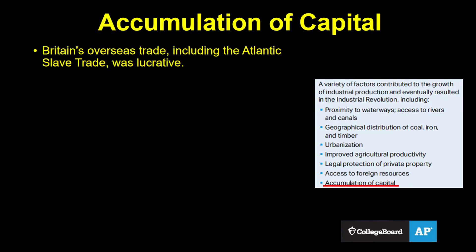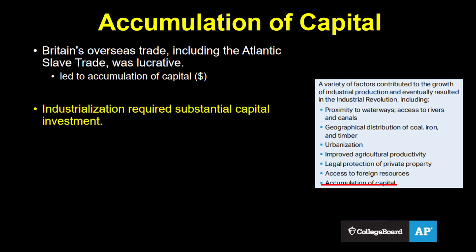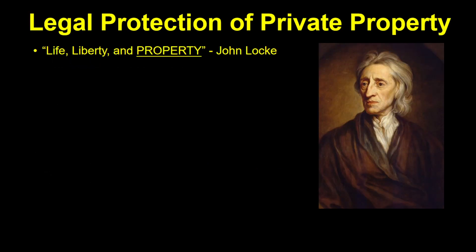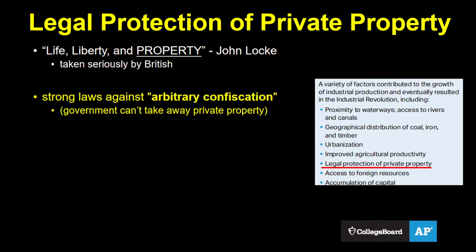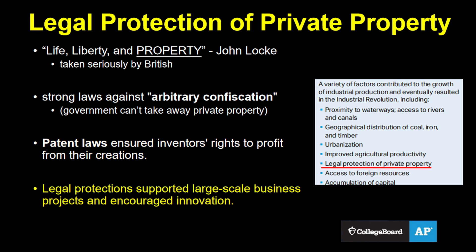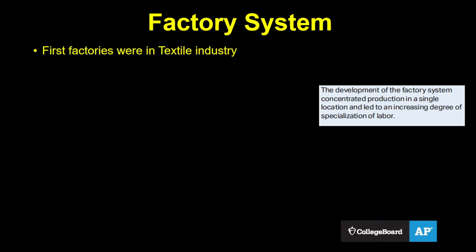This leads us to accumulation of capital. Britain's involvement in overseas trade, including the Atlantic slave trade, was highly profitable. This led to the accumulation of capital — money. Industrialization was a capital-intensive process, and the merchants and shareholders of the East India Company, Royal African Company, and others had accumulated the vast pools of capital to make it work. Finally, protection of private property. Property was one of John Locke's core natural rights, and one that the British took seriously. They had strong laws against arbitrary confiscation, meaning the government couldn't just take your property. They also had strong patent laws that guaranteed the right of inventors to profit off their inventions. These protections encouraged the large-scale business projects and innovations necessary for industrialization.